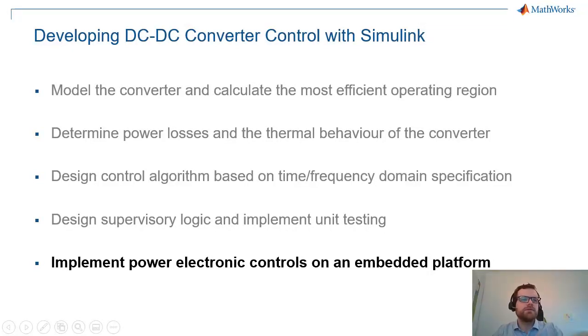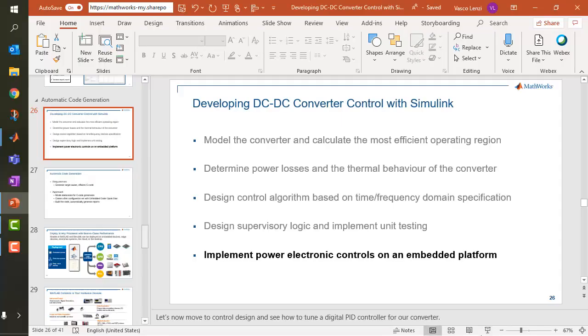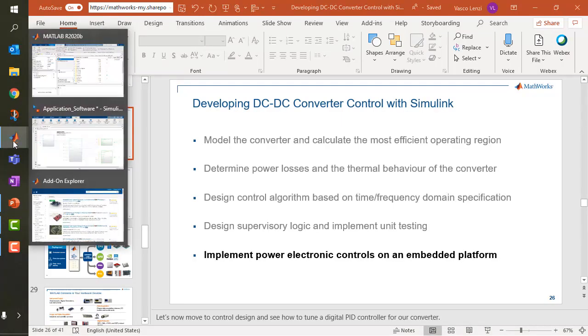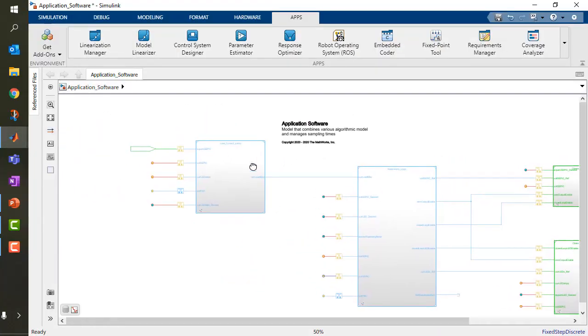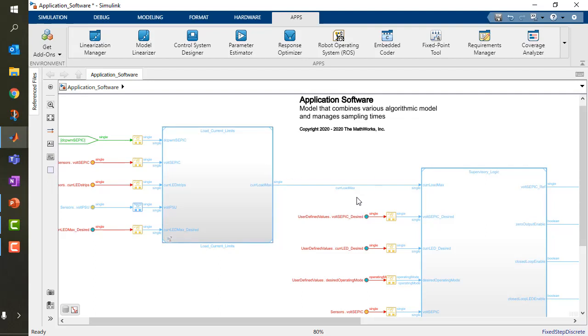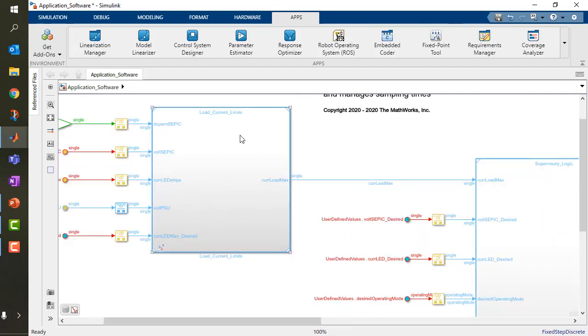Now it's the moment to talk a bit about implementation and how to implement power electronic controls on an embedded platform. I go back to Simulink and I will show you this model that I called application software. In this model I created my software architecture using model reference.